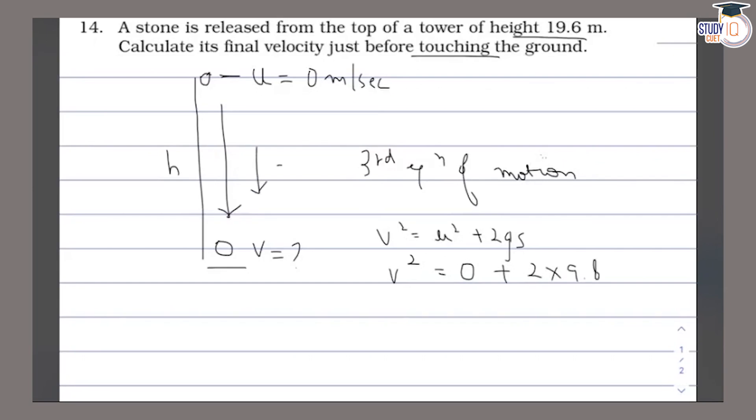v² is what we need to calculate. u² is zero. 2 into g: the value of g is 9.8.